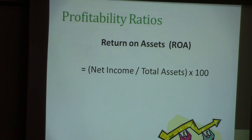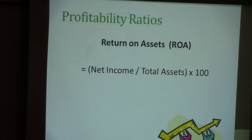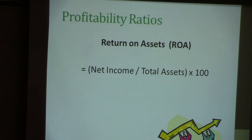Return on assets measures the amount of money that assets are making for the business. Have the management and executives made good decisions in putting money into assets? If they have purchased buildings, cars, and boats, are those making money for the business, or should they come out of those assets? The formula is net income divided by total assets times 100, giving you a percentage. This should also be around 10–15%, similar to profit margin, but management needs to continually evaluate whether they are making the right decisions.